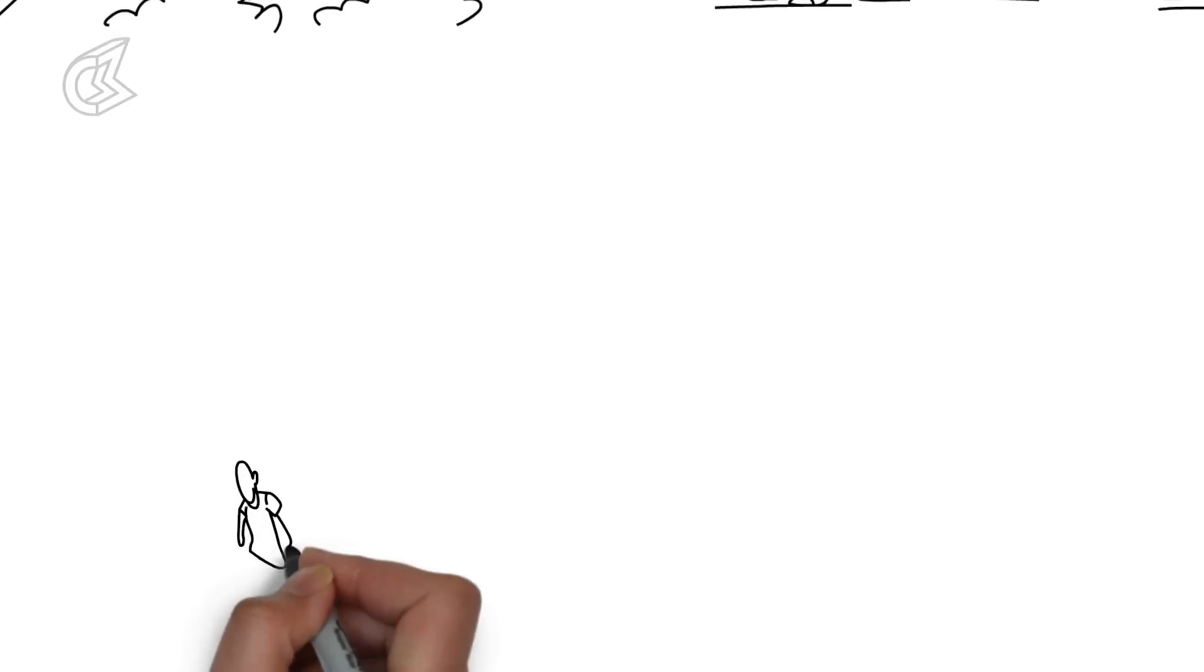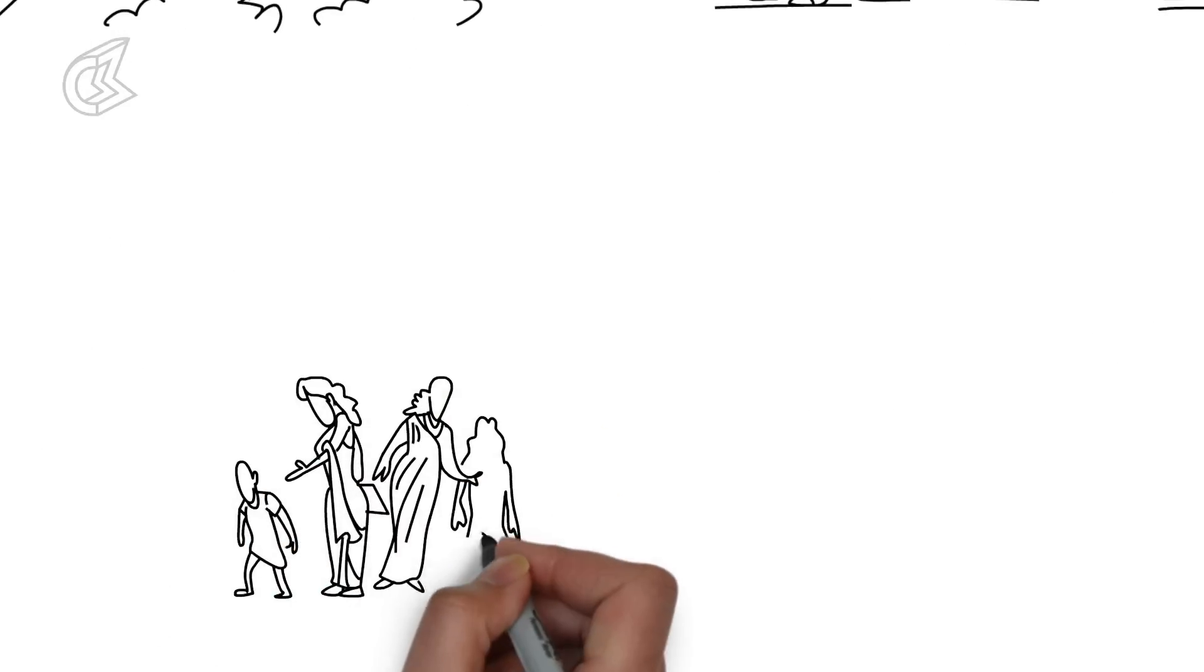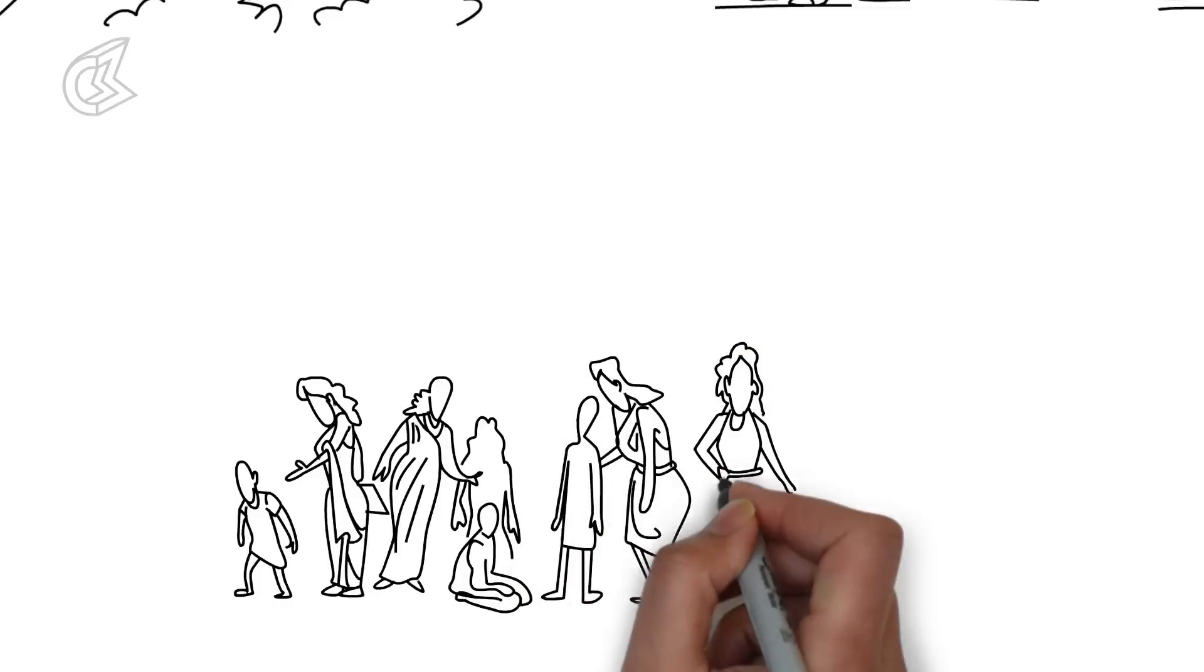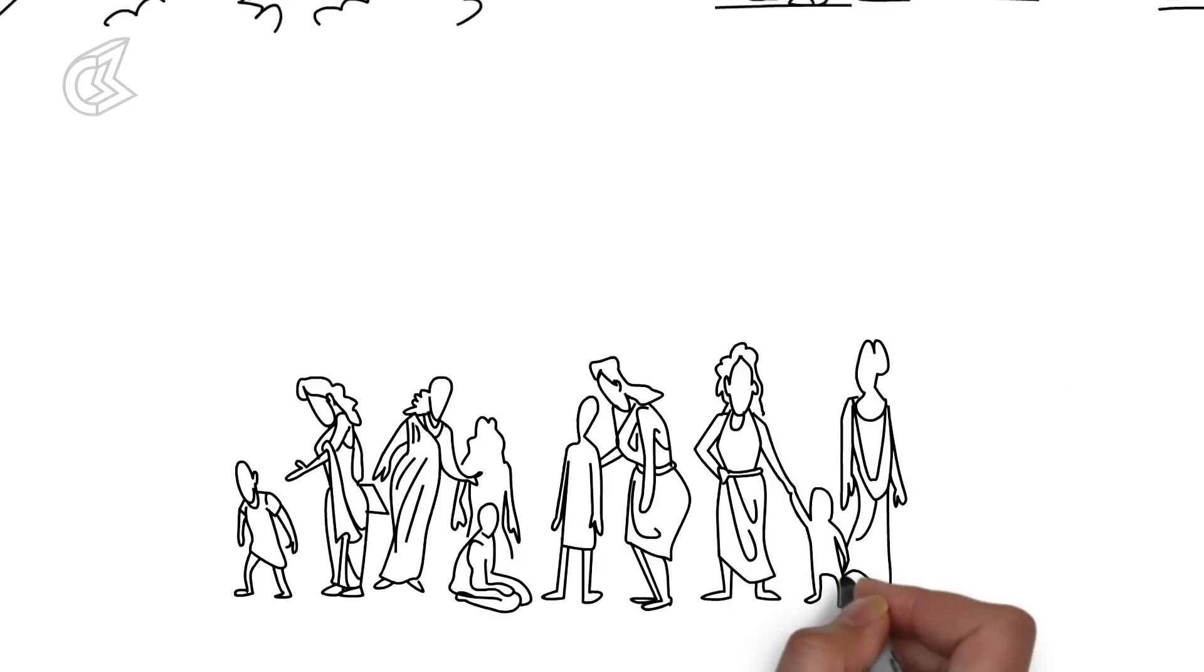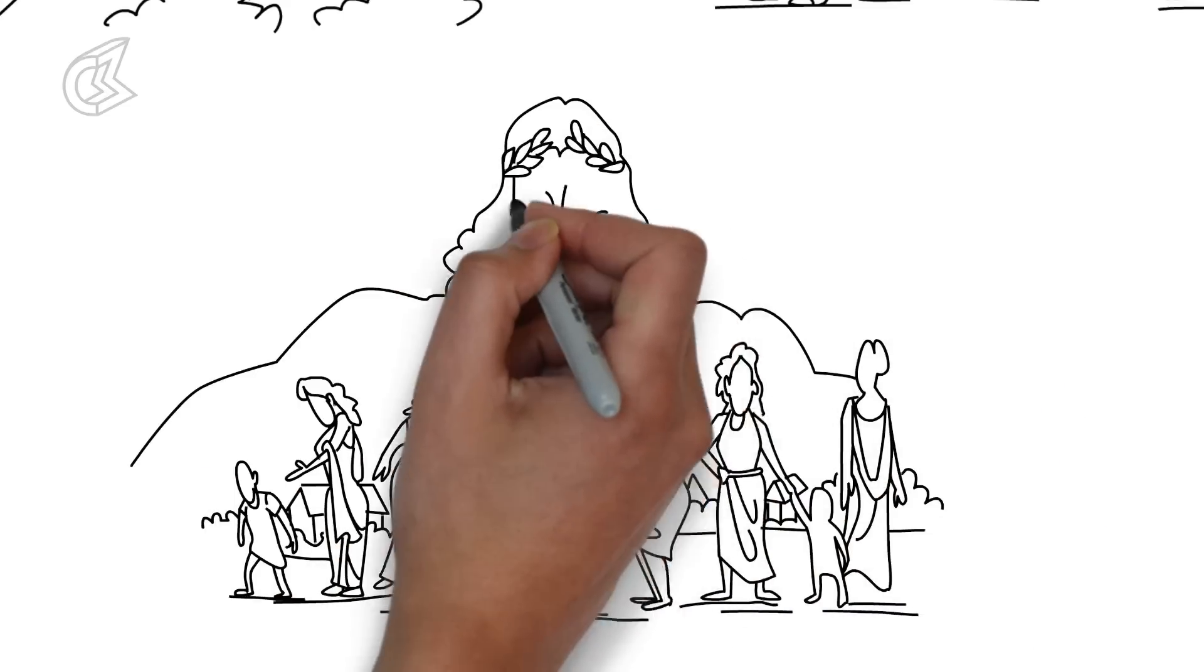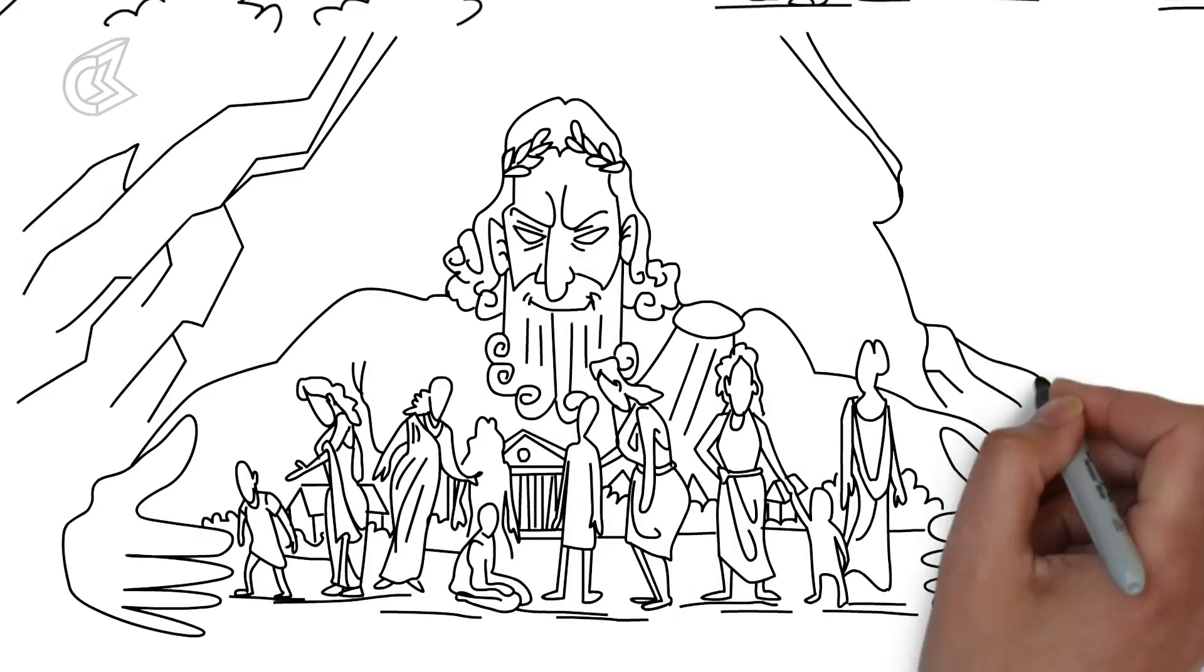Mythographers believe that the many stories of Zeus' infidelity indicate that matriarchy was being replaced around the Mediterranean by patriarchy, a system ruled by a single father figure. It is also possible that marriage as an institution was becoming popular in Greek society, making polygamy undesirable behavior.